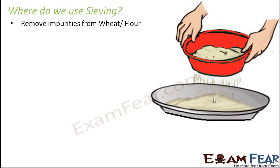One very common example of sieving is to remove impurities from wheat or flour. Whenever you bake a cake, prepare chapatis or parathas, the first thing you do is remove impurities. A lot of times flour might contain tiny worms or tiny pebbles, and it is very difficult to hand pick them. So the sieve only allows the tiny flour particles to pass through and does not allow the impurities. The impurities remain behind while the clean flour passes through.